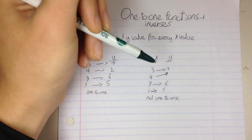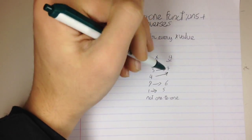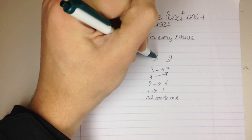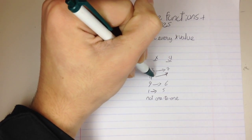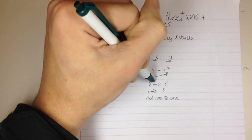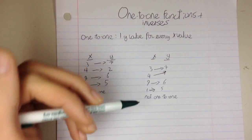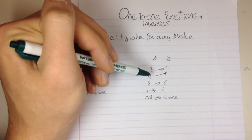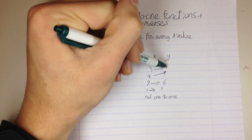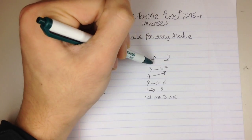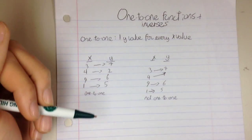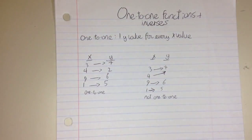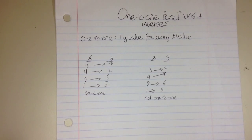Moving on to the right, I have another example. For our x values, we plug in 3 and get 7, plug in 4 and get 7, plug in 9 and get 6, and plug in 1 and get 5. You'll notice that in this function there is one y value for two x values — both x values have the same y value — and that would not be a one-to-one function.